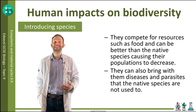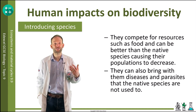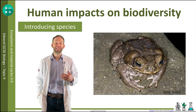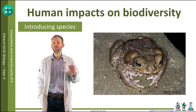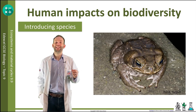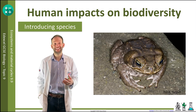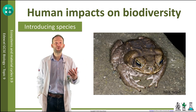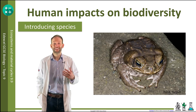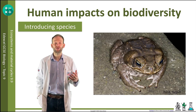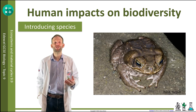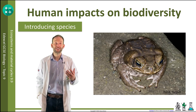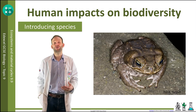A good example is the cane toad, introduced into Australia from South America to manage a pest called the cane beetle, which was eating the sugar cane. It killed the cane beetle, but then became an even bigger pest itself because the toads are poisonous and kill native species, and they have no natural predators in Australia. So they've been able to reproduce out of control and are now a huge pest.